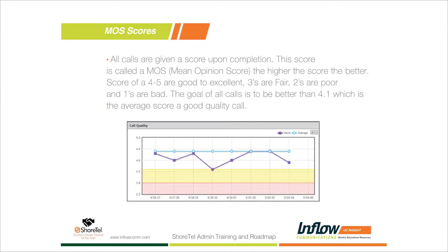There are many reasons calls could be scored lower: lost IP packets due to network connectivity, packet delays due to network congestion, DTMF issues with SIP trunks that can be caused by low or high volume. Jitter is the big one — the system will show delays on average packet delivery, and if packets come in too high the system will just discard those packets.